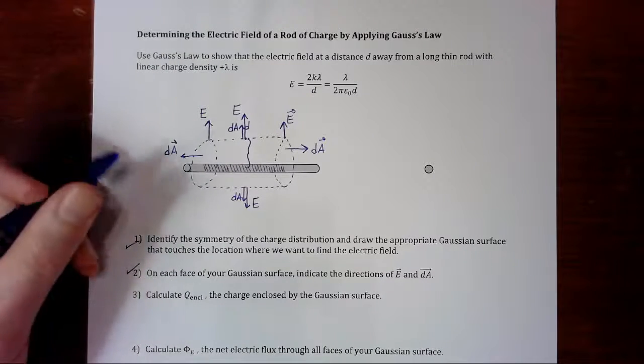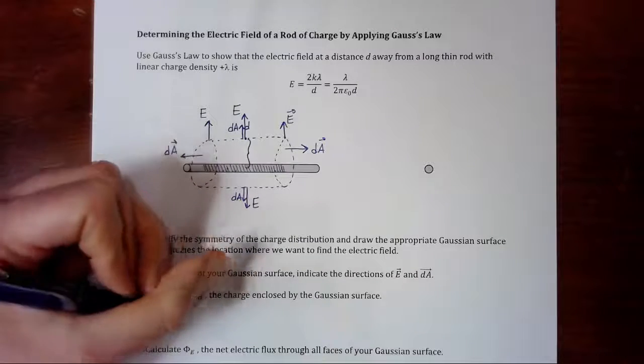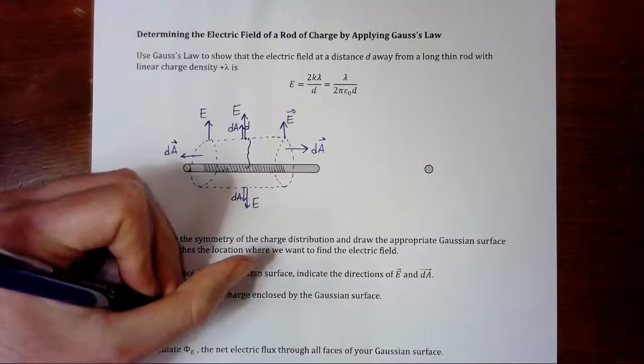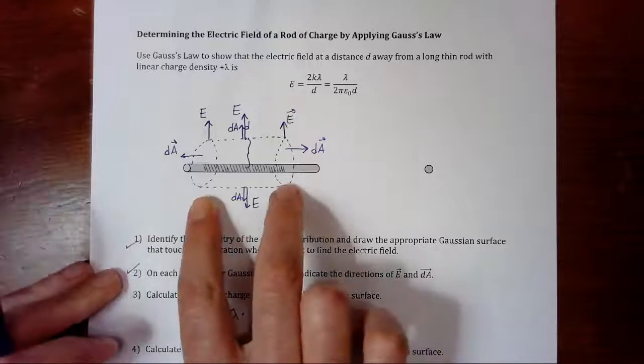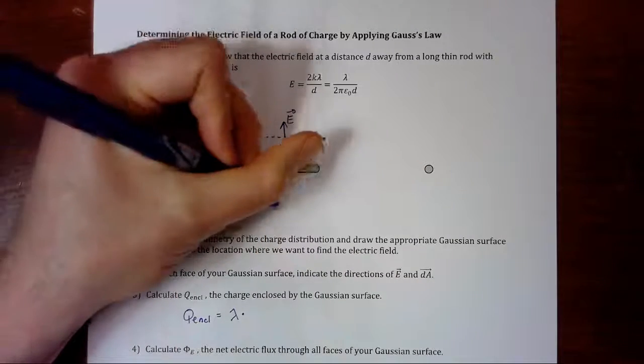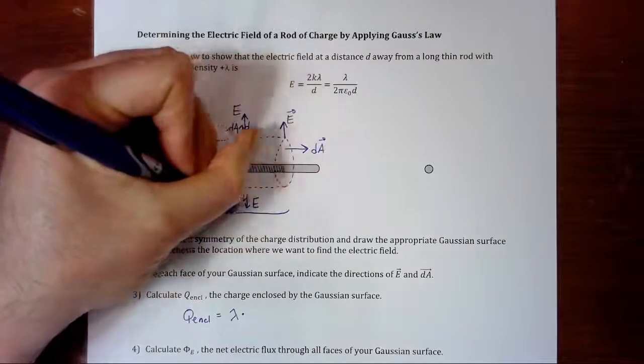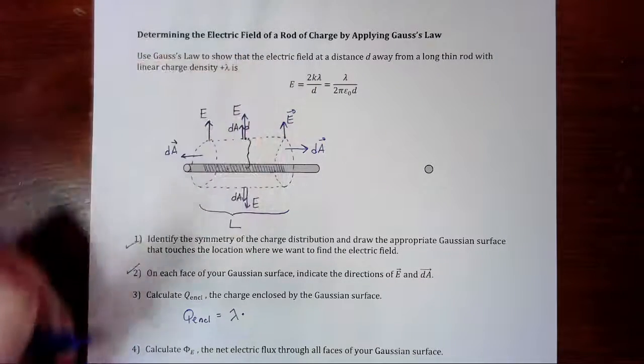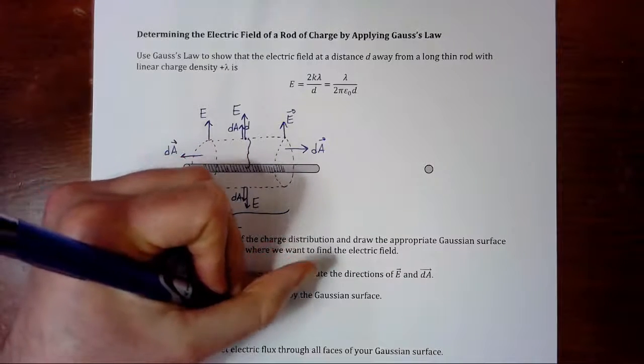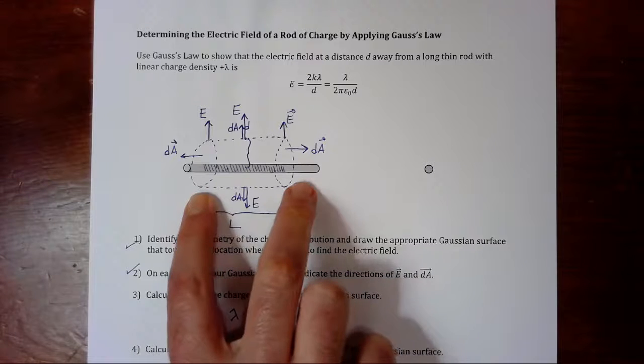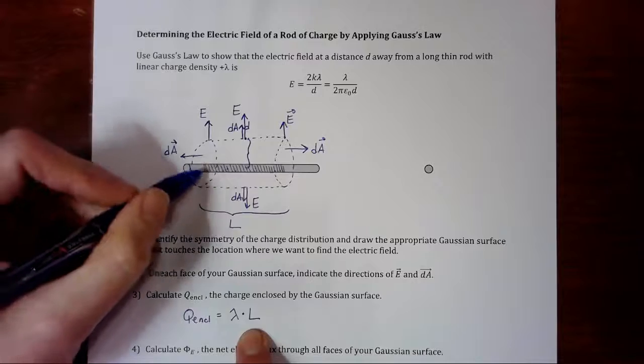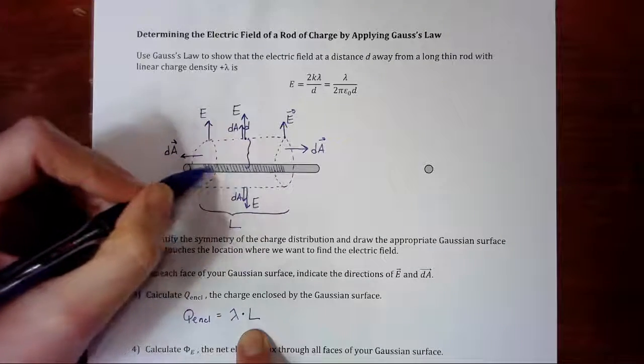And how much charge is here that we've shaded in. Well, we know that the linear charge density is lambda. So the Q enclosed is going to be lambda times how long my imaginary cylinder is. So let's just say that our imaginary cylinder is length L. Don't worry, that L is going to drop out later. So there's the charge enclosed, the linear density times how long my imaginary cylinder is, and that's going to be how much charge is inside the cylinder.